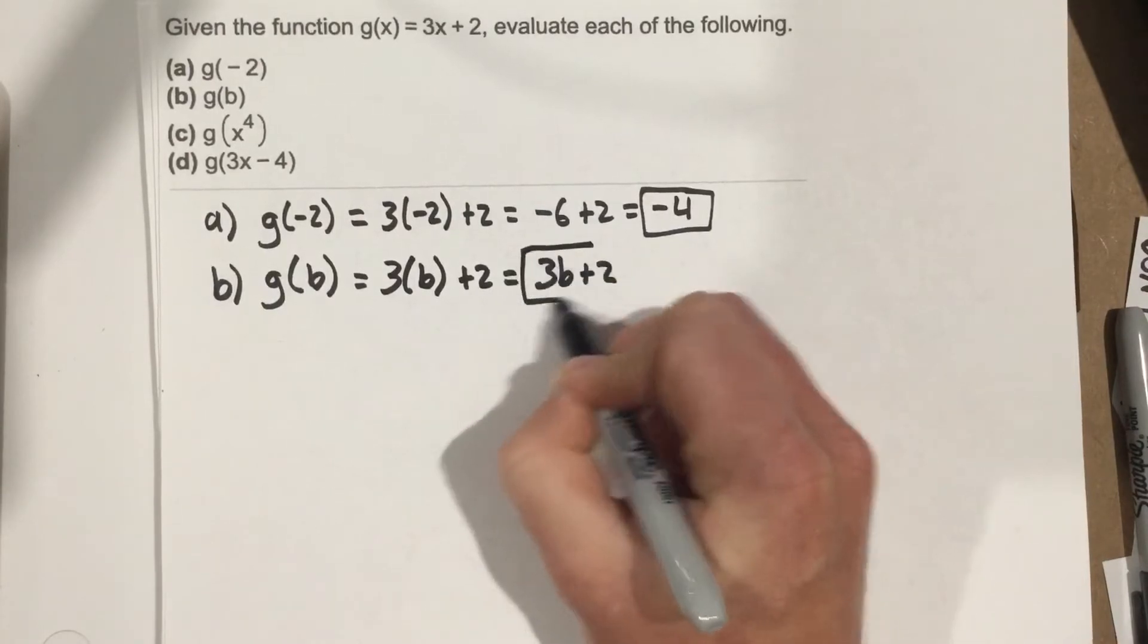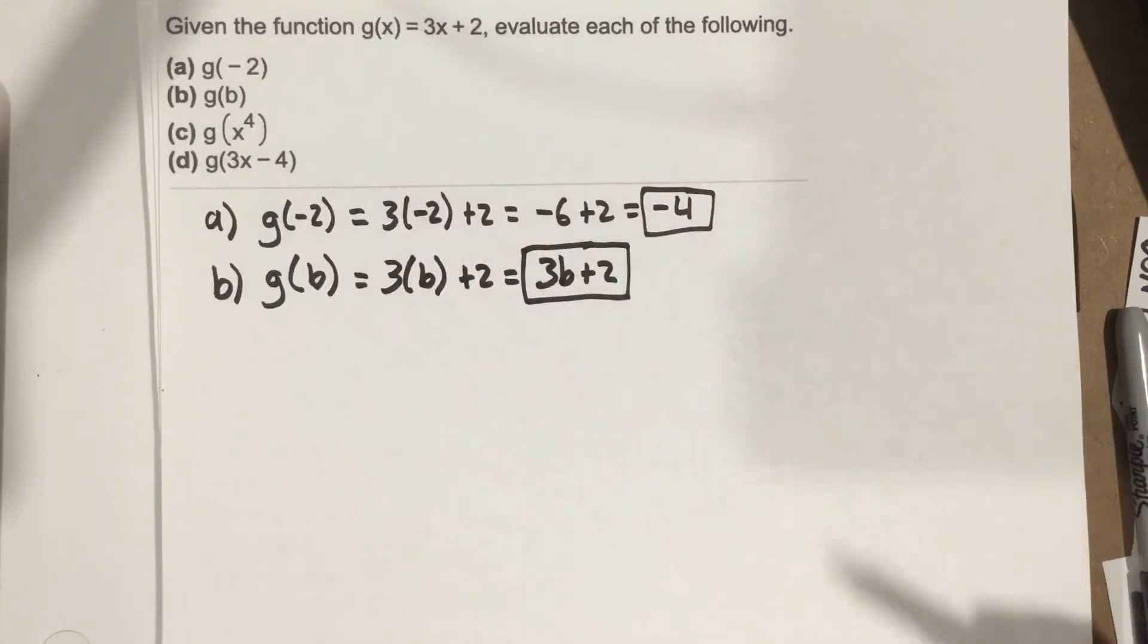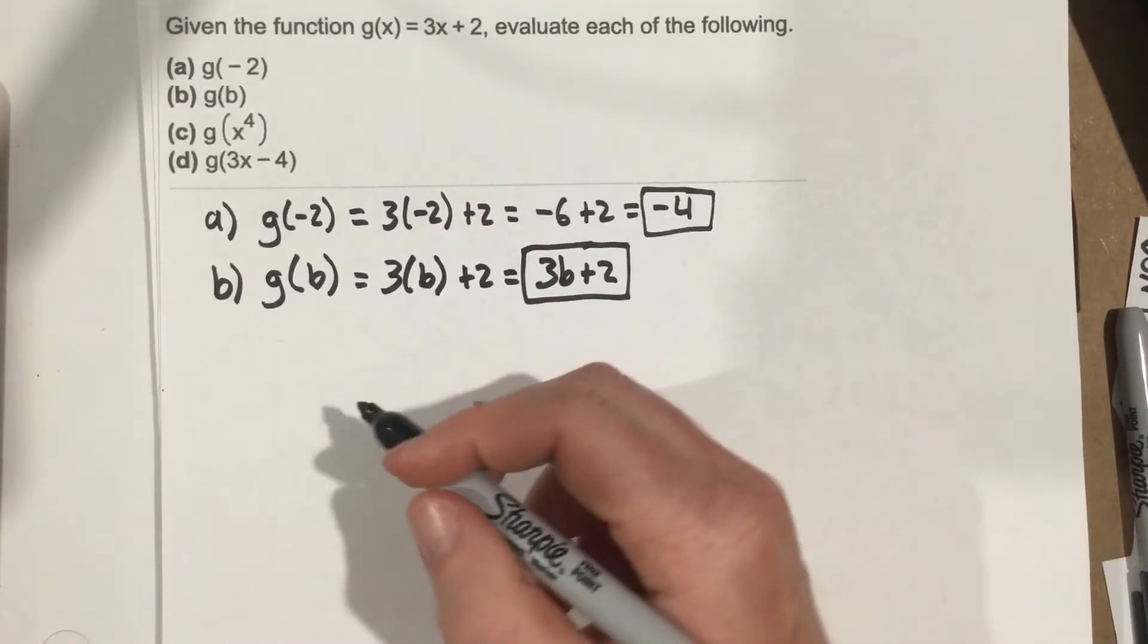So all they've done there is change our expression, or our function, from 3x plus 2 to 3b plus 2, just changing the variable in it.